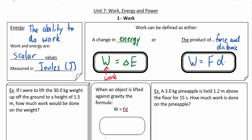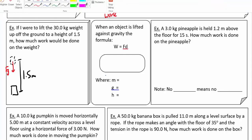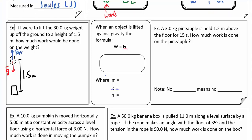We're going to do a few examples, because while work sounds like a really simple idea, there are a few confusing pieces to look at. In the first example: if I were to lift a 30-kilogram weight off the ground to a height of 1.5 meters, how much work have I done? While lifting it there are two forces at work — gravity pulling down and an applied force upward. If lifted at constant speed, those two are equal. Work equals force times distance, and the force needed to raise it equals the force of gravity, F_G.